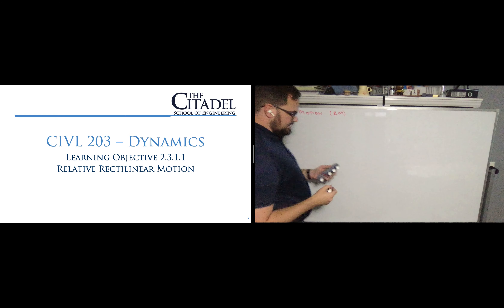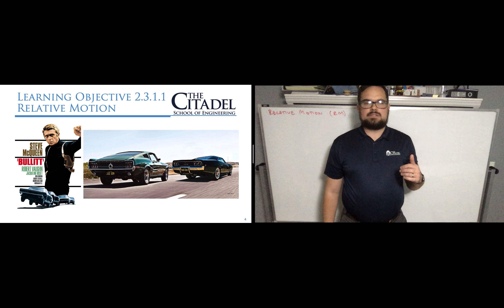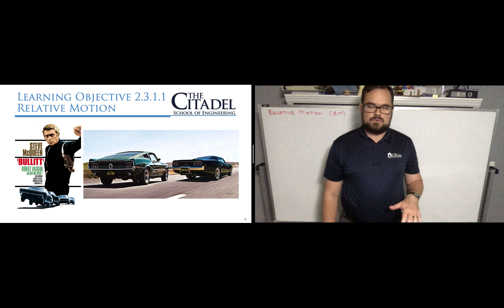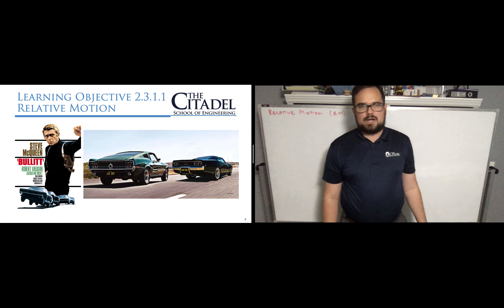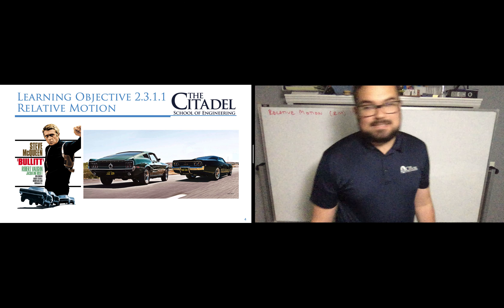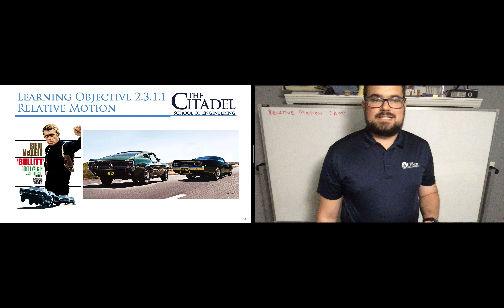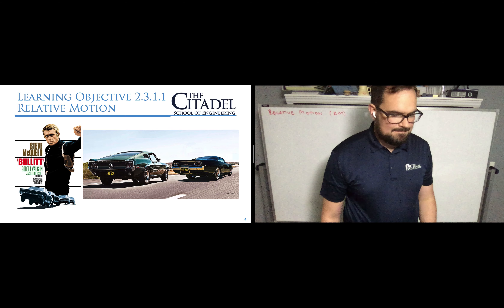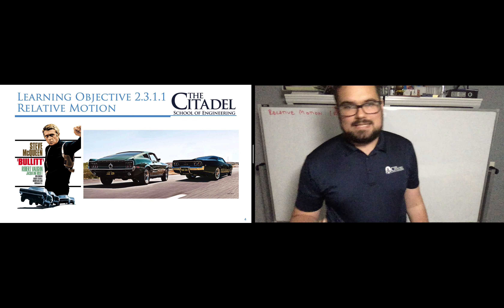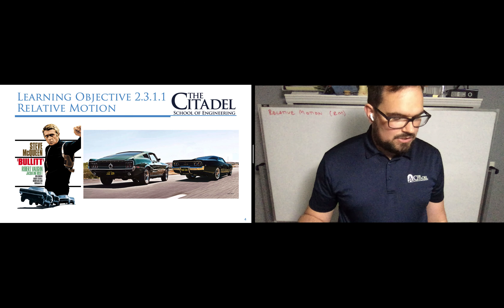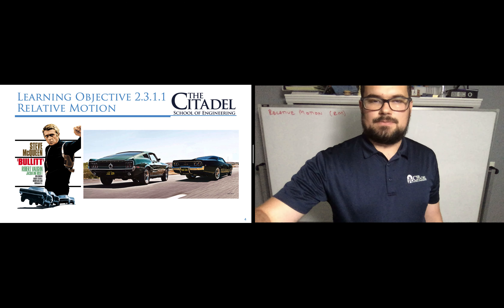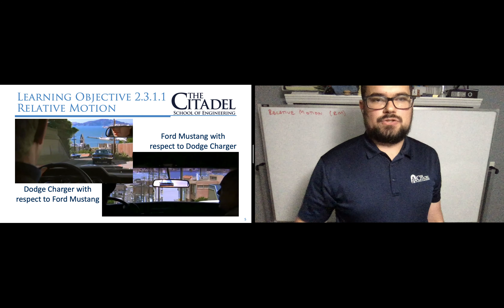The example I like to use is from the movie Bullitt. It's an older movie, well-known as the first modern car chase. If you're tempted to watch the movie, don't — just go YouTube the car chase; it's really all that's worthwhile. Most of the movie is Steve McQueen going into restaurants asking to use the phone. That said, the car chase is epic. Steve McQueen is in a green 1968 Ford Mustang the whole time, and the bad guys — two hitmen — are in a black 1968 Dodge Charger. Steve is chasing the bad guys, and I want us to look at their two different perspectives.